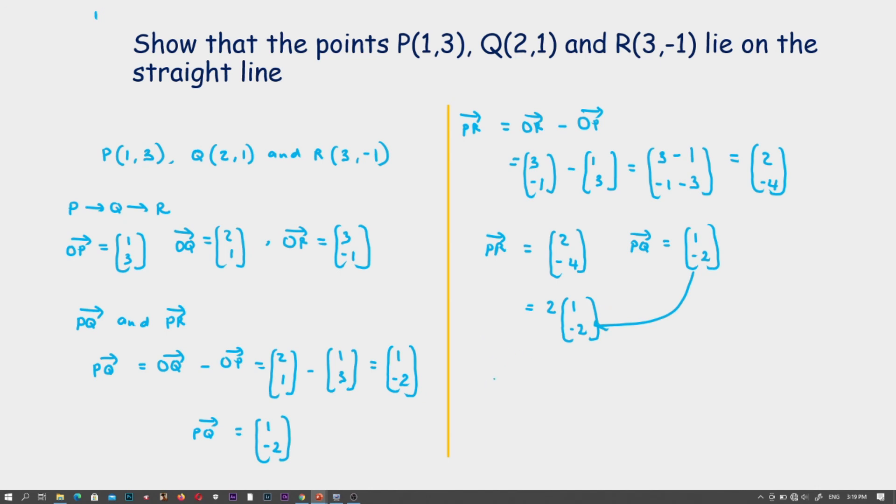So PR is equal to 2 times PQ. This shows that these points do lie on the straight line.